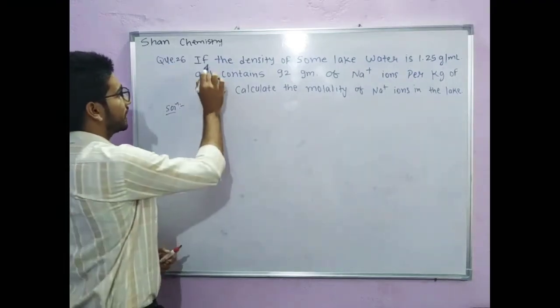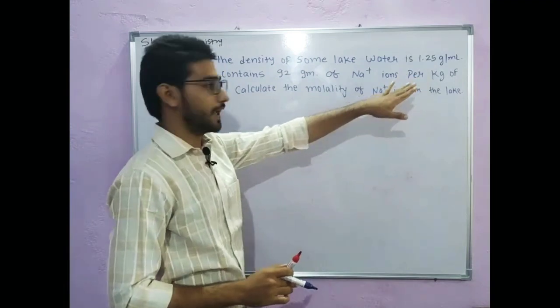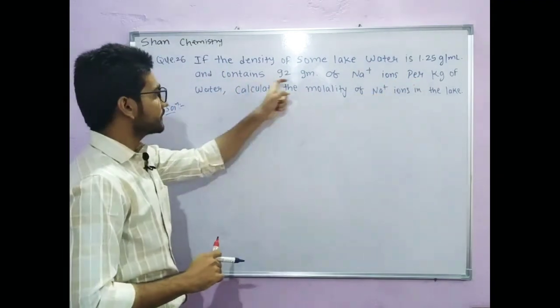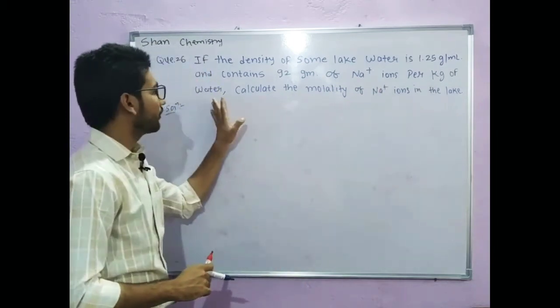Here is the question. If the density of some lake water is 1.25 gram per ml and contains 92 gram of sodium plus ions per kg of water.